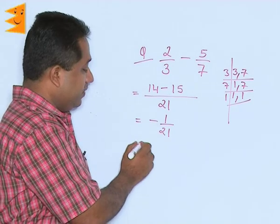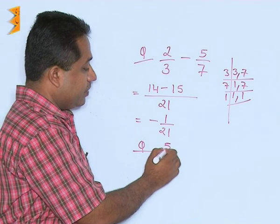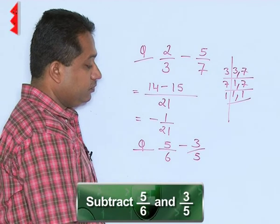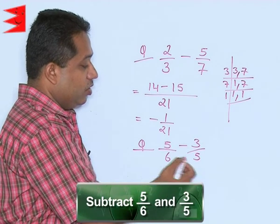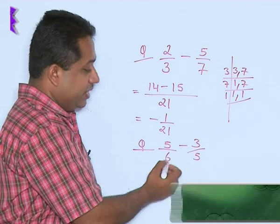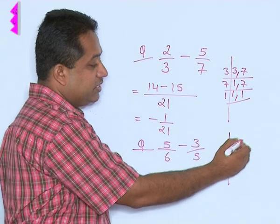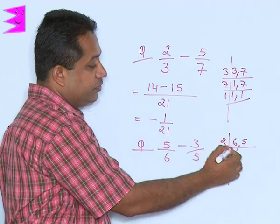Another example we can see where we have to subtract, let us say 5 by 6 and 3 by 5. Again, we find that the denominators are different. When the denominators are different, we will take the LCM. So, LCM of 6 and 5 has to be taken.